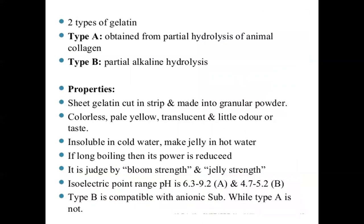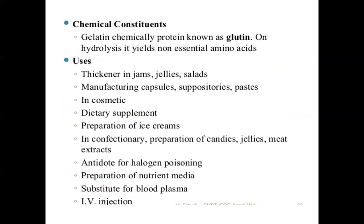There are two types of gelatin: Type A is obtained by partial acid hydrolysis of animal collagen, and Type B is by partial alkaline hydrolysis. Properties: gelatin is available in sheet form, which can be cut into strips and made into granular powder. It is colorless or pale yellow, translucent, with little odor or taste. It dissolves in cold water to form a jelly; prolonged boiling reduces its gelling power. It is assessed by bloom strength and jelly strength. Since it is a protein, its isoelectric point ranges pH 4.7–5.2 (Type B) and 6.3–9.2.